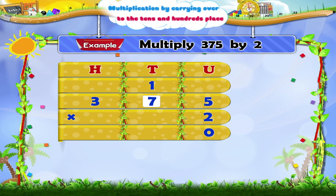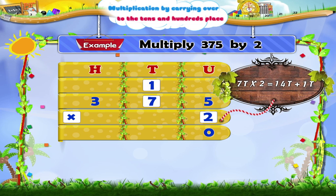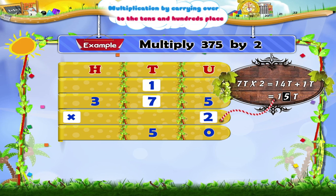Next, multiply the tenth digit 7 in 375 by 2. We get 14 tenths. Add to this the carried over 1. The product is 15 tenths, which means 1 hundred plus 5 tenths. So write 5 in the product in the tenths place. Carry over 1 hundred to the hundredths place and write it above the hundredths in the multiplicand — that is, above 3.